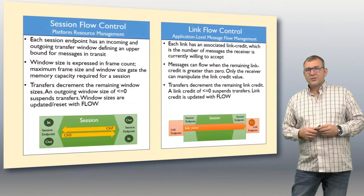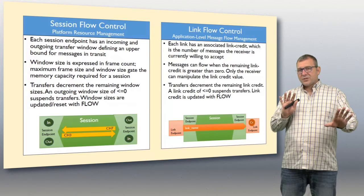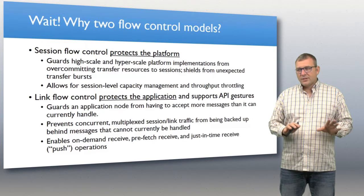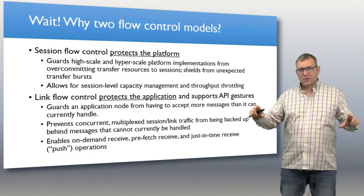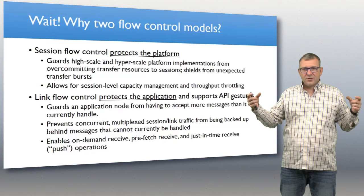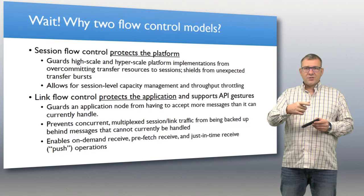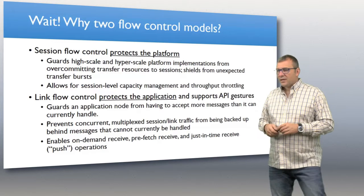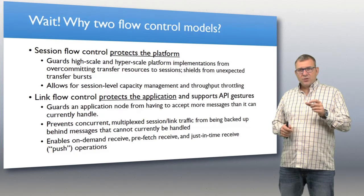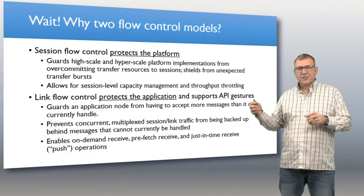A link credit of zero or less suspends that flow immediately. So why do we need both? Session flow control protects the platform — it deals with memory buffers and throughput, allowing you to dial throughput and memory consumption so it guards the platform from over-committing resources.